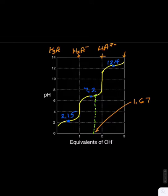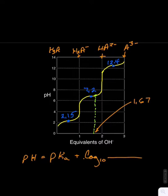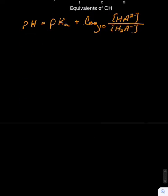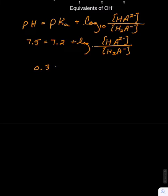Write the appropriate Henderson-Hasselbalch equation. pH equals pKa plus log to the base 10 of the concentration of HA2- over the concentration of H2A-. Insert the pH and pKa and subtract, and we have this equation.